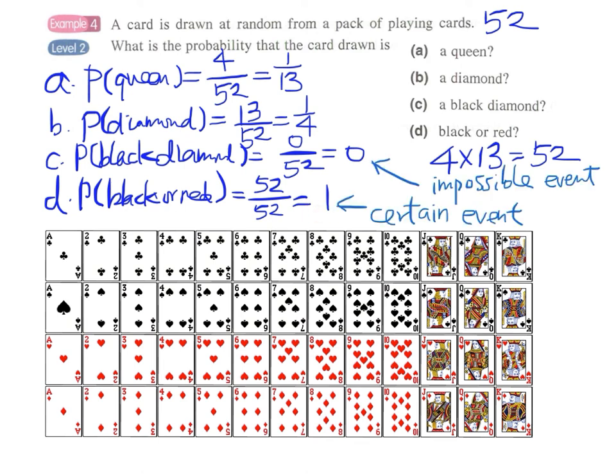So this will be 1. So finally, we write this: impossible event for zero probability and certain event for probability equals to 1.